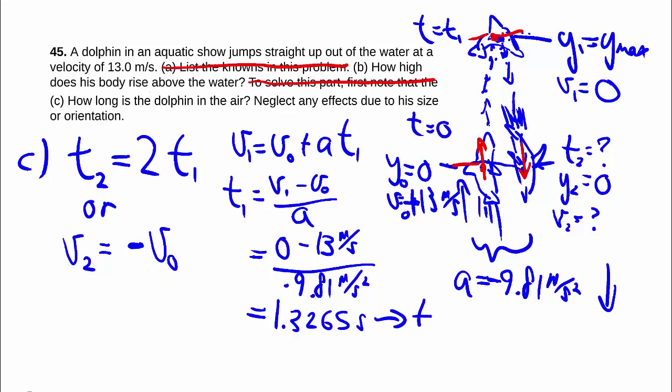And so therefore, t2 is twice as big as that, giving us 2.65, this is our final answer, so we'll round it down to 3 sig figs, 2.65 seconds.